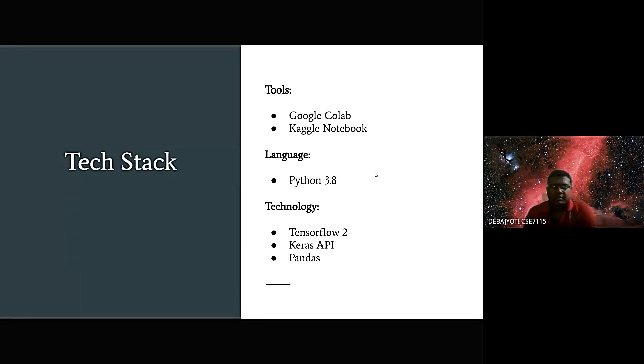Here are the tech stacks. We used Google Colab and we faced some problem issues. Like in Google Colab that due to inactivity, it automatically shut down. So we use the Kaggle notebook which is more powerful in terms of Python notebook. And we use language Python. And for deep learning purposes, we use TensorFlow 2, Keras API, and Pandas for our image processing.